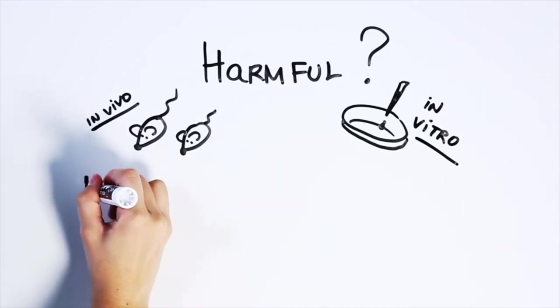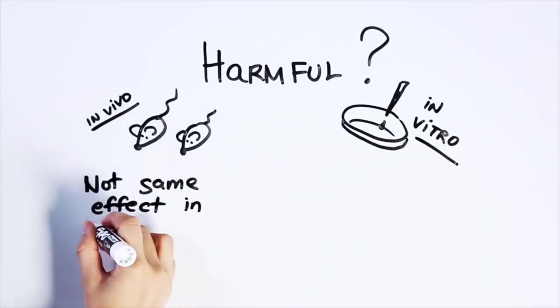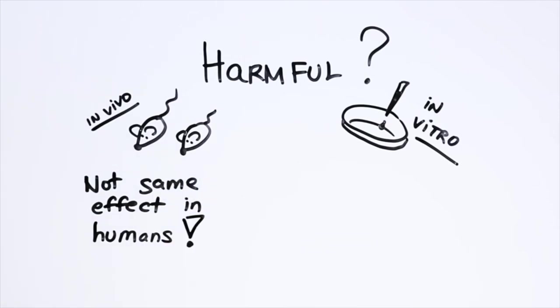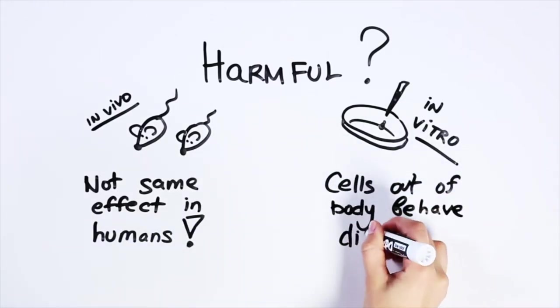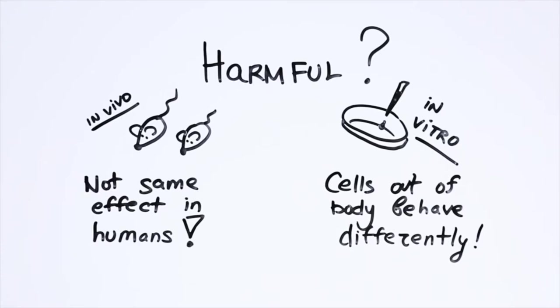For example, many substances can affect us differently than they affect animals. So while chocolate is harmful to dogs and aspirin is toxic to cats, both are safe for humans when used appropriately. As for in vitro studies, cells that are isolated in the lab behave differently than cells inside the body. So we have to be very careful applying the results of such studies directly to human health.